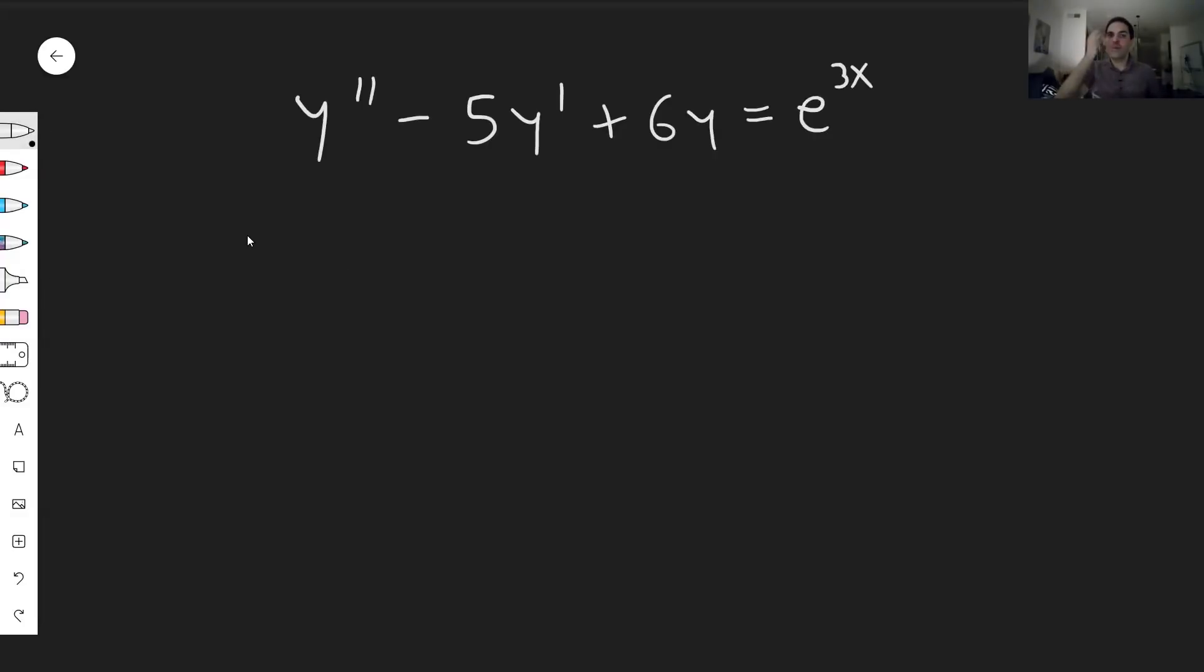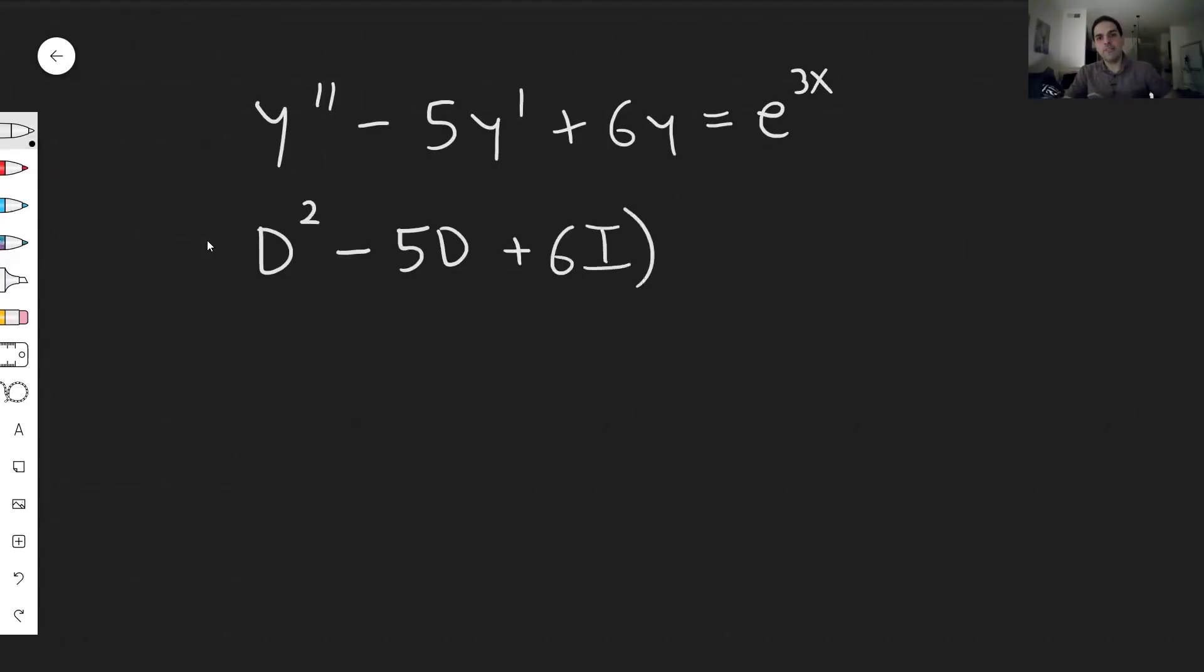Now usually for this equation you would use undetermined coefficients or variation of parameters, but none of that stuff today. No guesswork, I'll give you a direct method. For this we will use the factoring method. It turns out you can write this differential equation as follows: (D^2 - 5D + 6I)[y] = e^(3x).